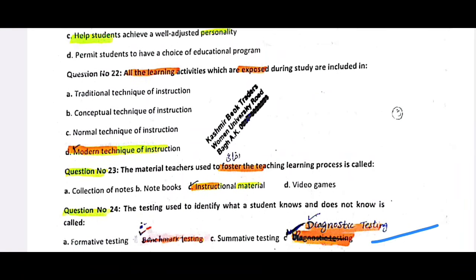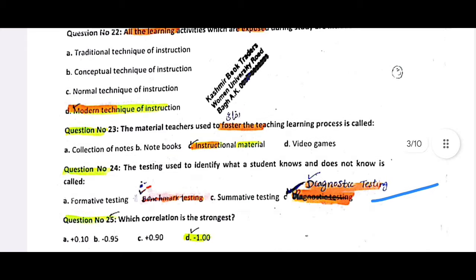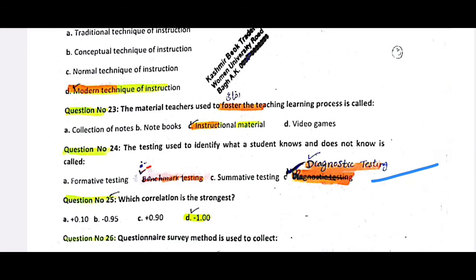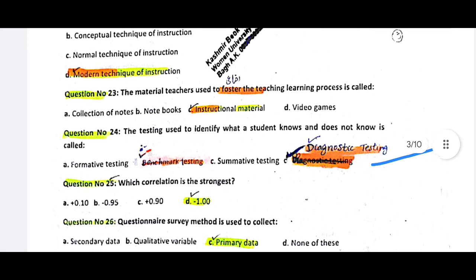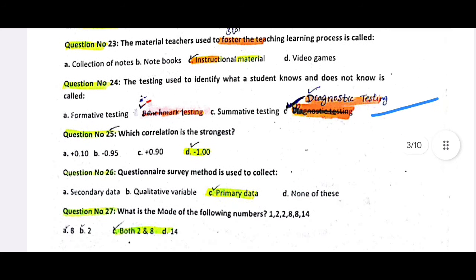The material a teacher uses to foster the teaching and learning process is called instructional material. This is called diagnostic testing. Regarding the strongest correlation: if asking for the most negative, it is -1.0; if asking for the most positive, it is +0.90, which is the strongest positive.